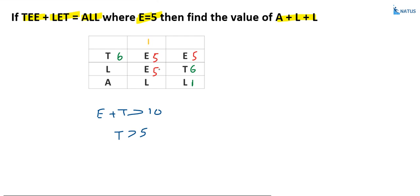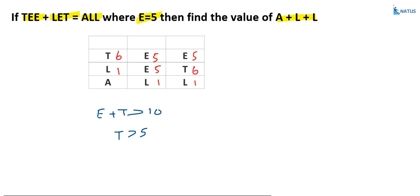With the carry of 1 from the first column: 1 plus 5 plus 5 equals 11, so 1 is written and 1 is carried over. So l is equal to 1, and that condition is satisfied. Substituting the values: t equals 6, l equals 1, and the carry goes from this place to the next.